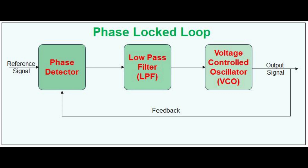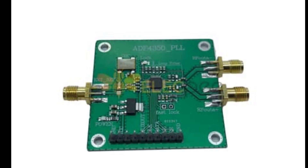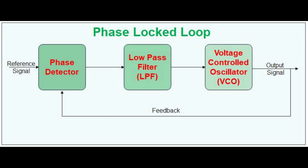To obtain the grid phase angle and the frequency, it is very necessary to implement synchronization techniques such as the phase-locked loop. Phase-locked loop, or PLL, is one of the most widely used synchronization techniques for the extraction of the phase angle in a grid-connected microgrid.